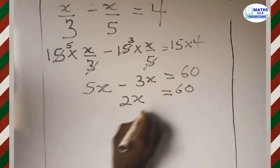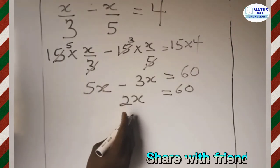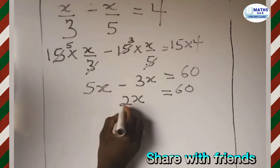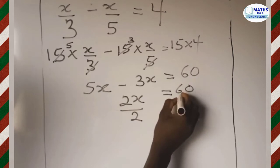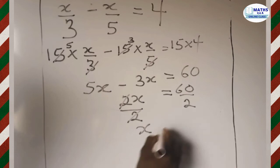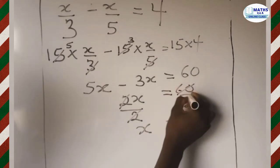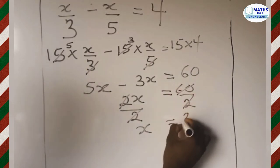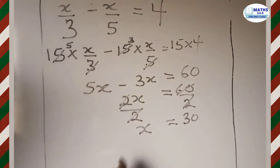Now we want x, so what we're going to do is divide each side by 2. 2 divides 2 gives 1, we have x left here. 60 divided by 2 is 30, so x is equal to 30.